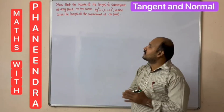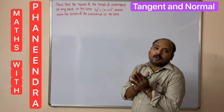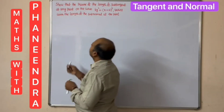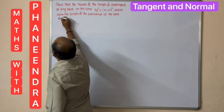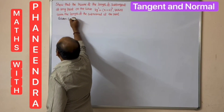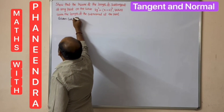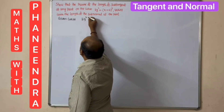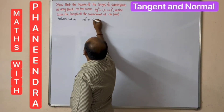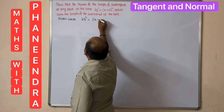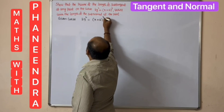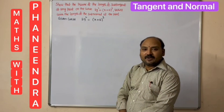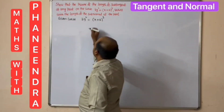First, we need the length of subtangent and length of subnormal. The given curve is y² = (x + a)³. Now differentiate both sides with respect to x.